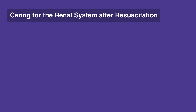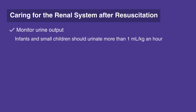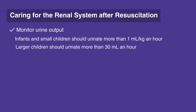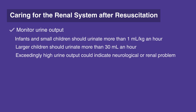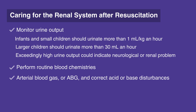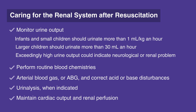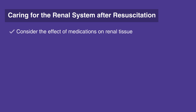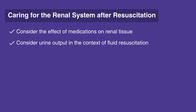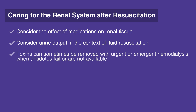When caring for the renal system after resuscitation, follow this checklist: Monitor urine output. Infants and small children should urinate more than 1 mL per kg per hour. Larger children should urinate more than 30 mL per hour. Exceedingly high urine output could indicate a neurological or renal problem, or diabetes insipidus. Perform routine blood chemistries. Arterial blood gas, or ABG, and correct acid-base disturbances. Urinalysis when indicated. Maintain cardiac output and renal perfusion. Consider the effect of medications on renal tissue, or nephrotoxicity. Consider urine output in the context of fluid resuscitation. Toxins can sometimes be removed with urgent or emergent hemodialysis when antidotes fail or are not available.